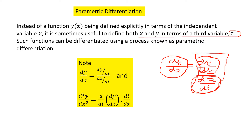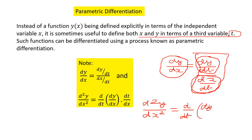For the second order, we need to find d²y/dx². To get d²y/dx² we write this as d/dt of (dy/dx) multiplied by dt/dx.